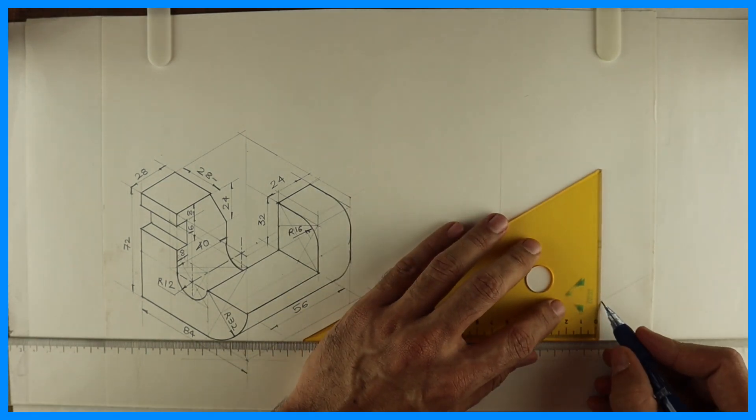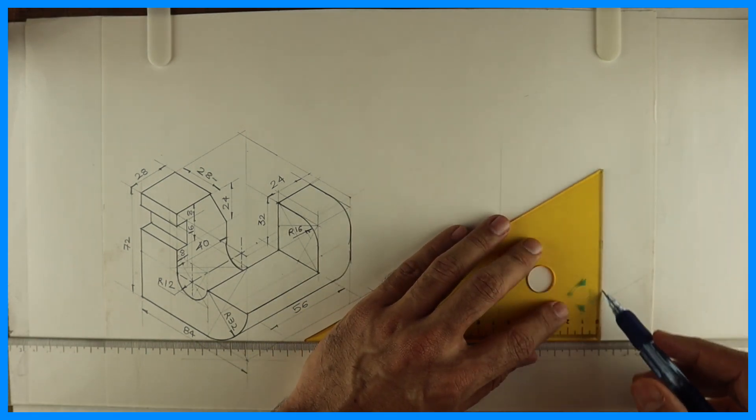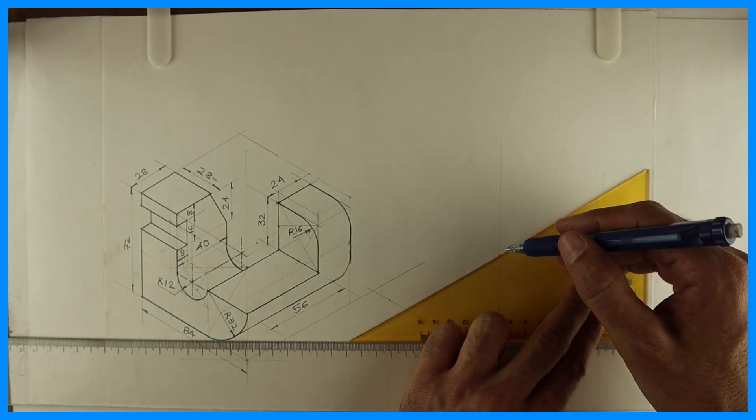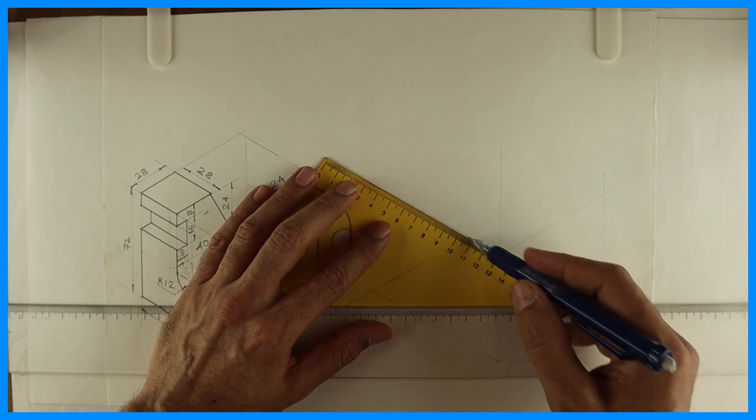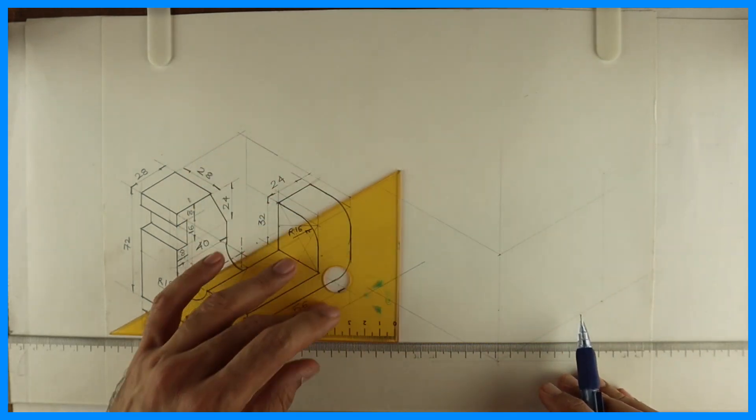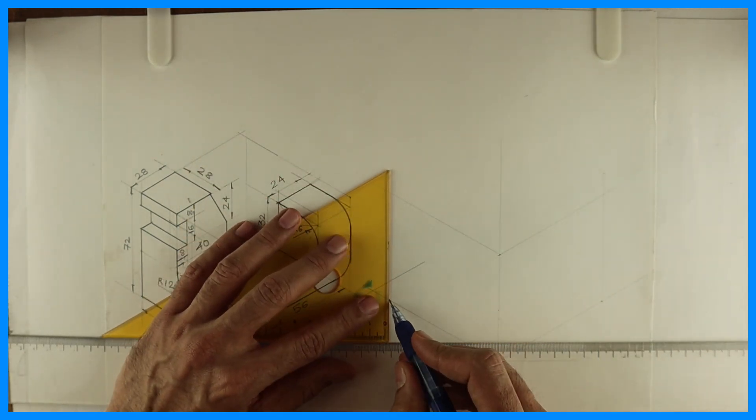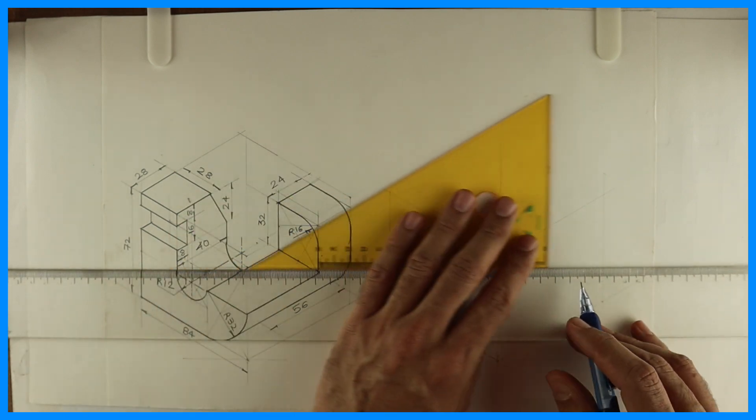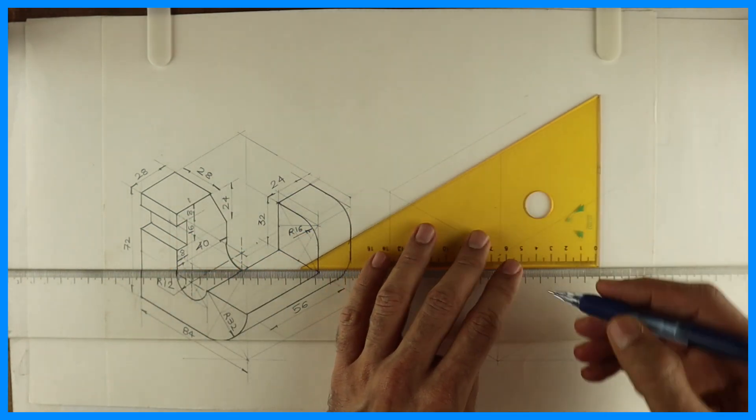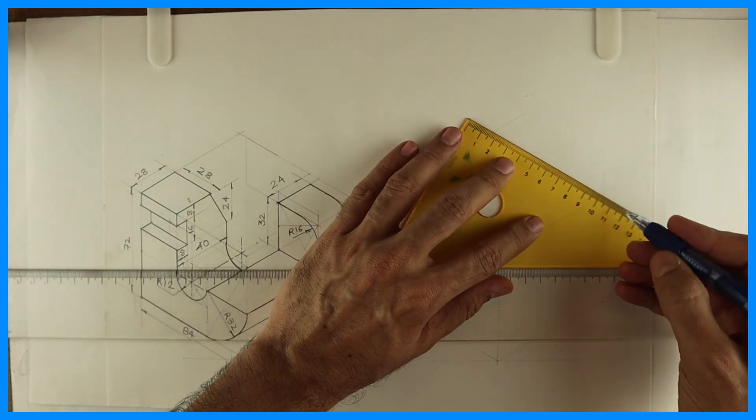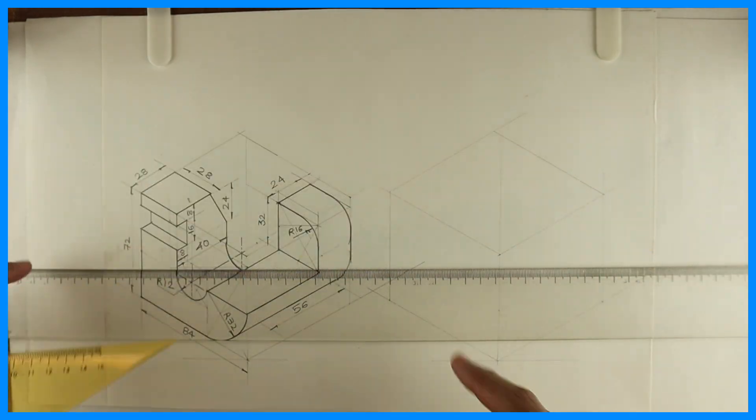After that you draw vertical line. You draw 30-30 degree and you complete the box. From here you extend this line, and from here you extend this line. So we got this box.